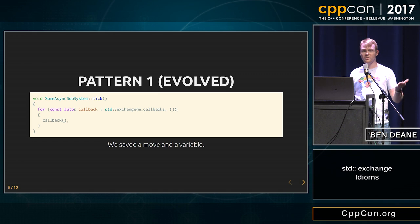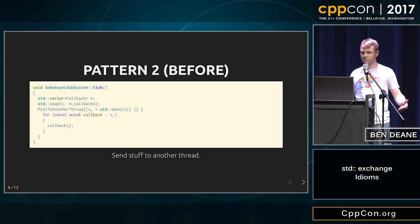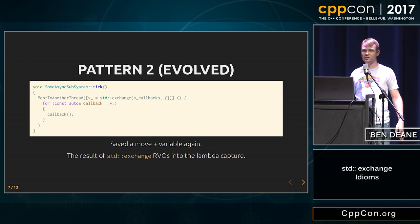Another thing you might do is post something to another thread in a lambda. It starts out looking like this — you can see the swap and then the move into the lambda. Again, it just becomes a std::exchange in the init capture of the lambda. Again, you save a move and a variable. The result of exchange RVOs into the lambda capture.